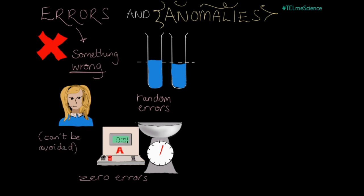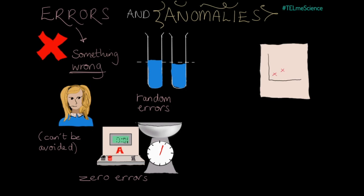You can minimize them with careful experiment design and reduce them by repeating your investigation and calculating a mean from that data, but they'll still be there. An anomaly is a result that differs from the rest or from what was expected, but it can't be explained away by the normal random variation.